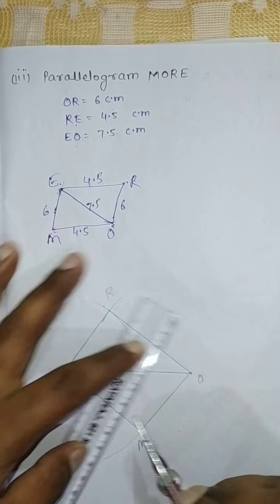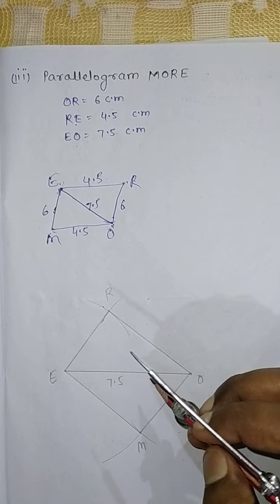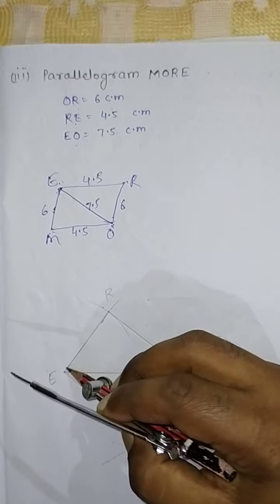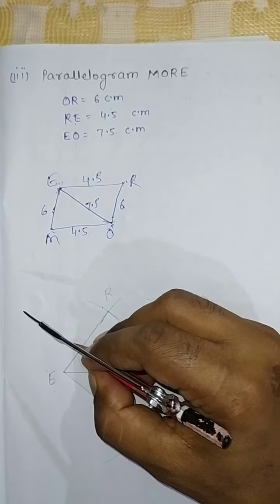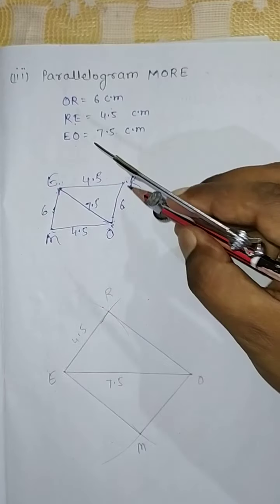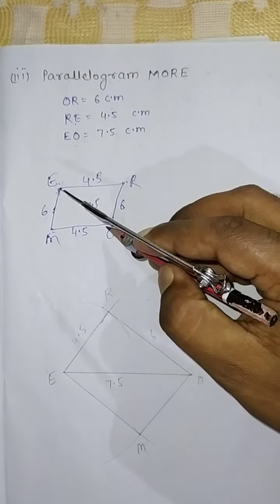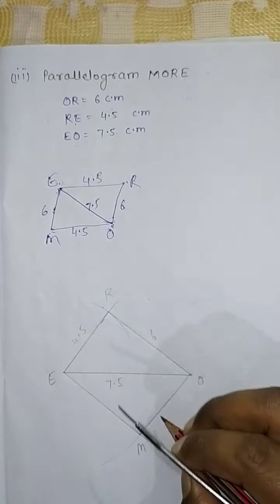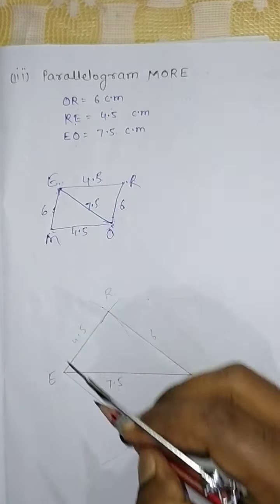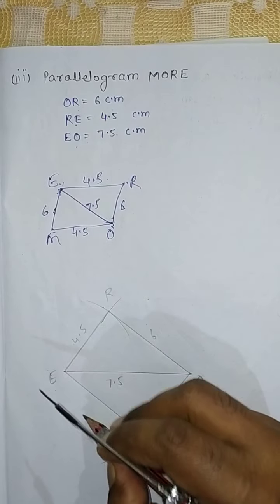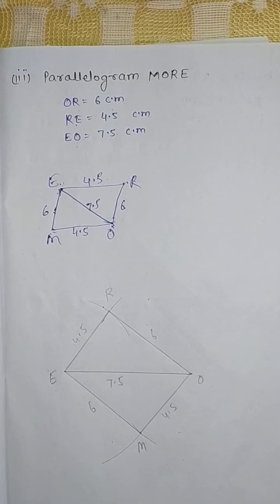This is the required quadrilateral (parallelogram MORE), where ER equals 4.5 cm, RO equals 6 cm, OM equals 4.5 cm, and EM equals 6 cm.